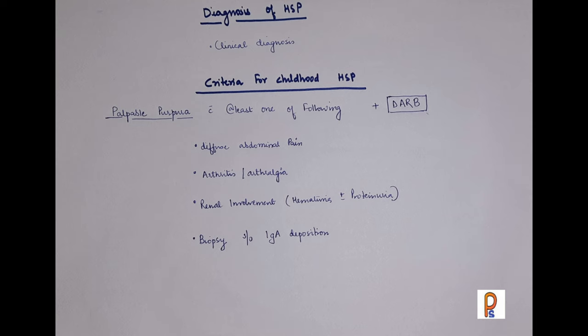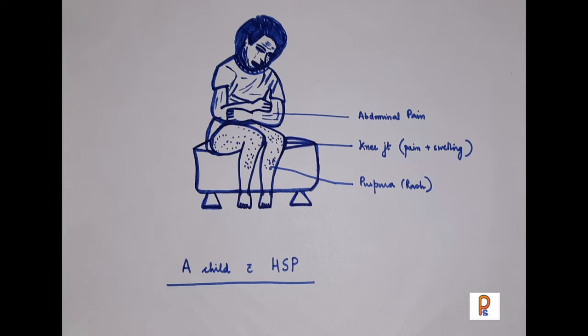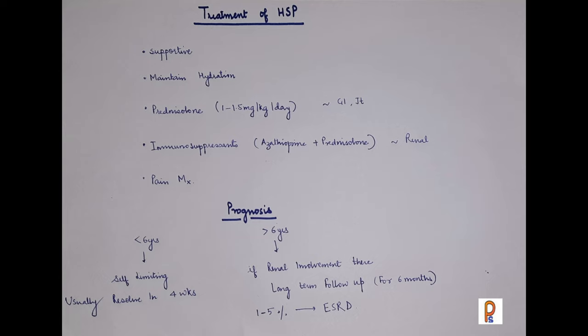So consider a child with a history of URTI who has presented with a rash — typically palpable purpura involving the lower limbs and buttocks — along with abdominal pain, arthritis, and possibly renal involvement. Having clinically established the diagnosis of Henoch-Schönlein Purpura, the treatment is mainly supportive.